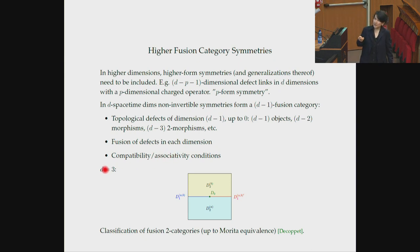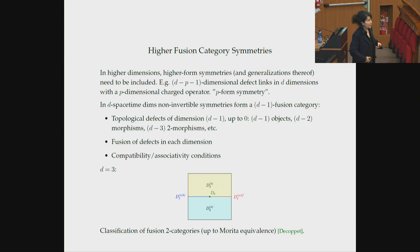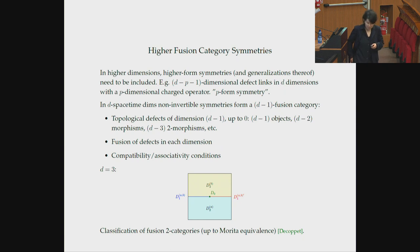For a three-dimensional quantum field theory, you would have surfaces and lines; lines can also be junctions between surfaces and points. In two dimensions, there's up to gauge equivalence a classification of these two-fusion categories.